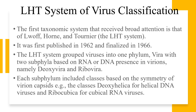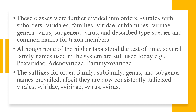The first taxonomic system that received broad attention is the LHT system of classification. The LHT system grouped viruses into one phylum, Vira, with two subphyla based on the presence of RNA or DNA: the Deoxyvira and the Ribovira. Each subphylum included classes based on the symmetry of virion capsids — for example, helical DNA viruses were placed in the class Deoxyhelica, or cubical RNA viruses in the class Ribocubica. These classes were further divided into orders, suborders, families, subfamilies, genera, and subgenera. For species, common names were assigned.